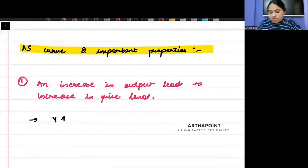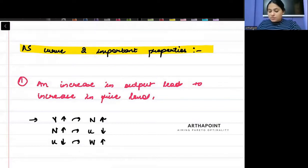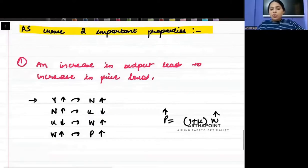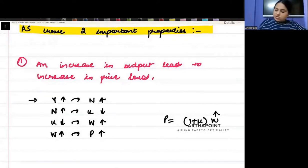When your output increases, that means you are employing more people. When employment increases, it means unemployment will decrease. But when unemployment will decrease, it means your bargaining power will improve. So your wages will increase. When your wage will increase, it means that firms charge a price as a proportion of the wage. Price is 1 plus mu into W. So when W increases, P will increase. So there is a positive relationship between P and W.